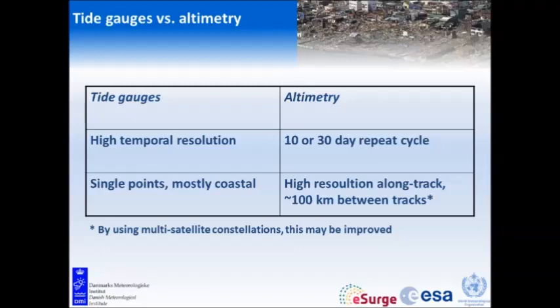The Dutch have one measuring station out in the open North Sea that provides real-time data, but that's one of the only ones. Altimetry has a 10 or 30-day repeat cycle, but it has high resolution along-track. There's about 100 kilometers between tracks, and with several different satellites you might get better spacing, but spatial resolution is still limited. Importantly, you do have measurements in the open water — that's an important difference compared to the tide gauges.